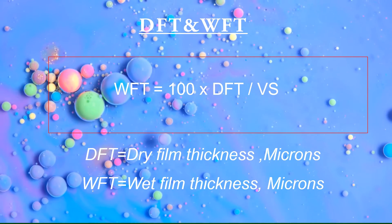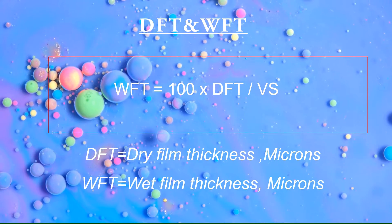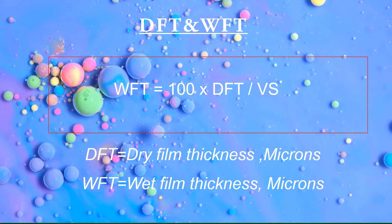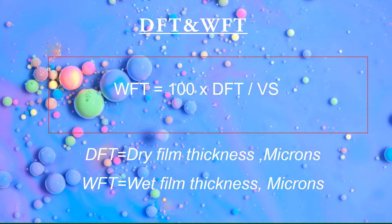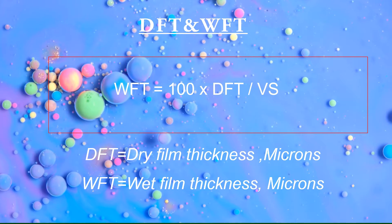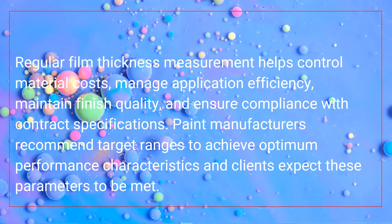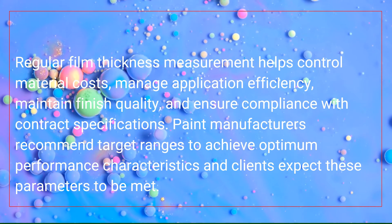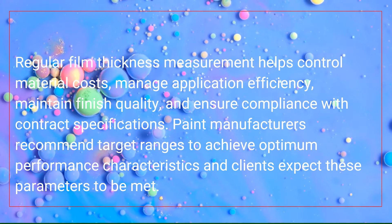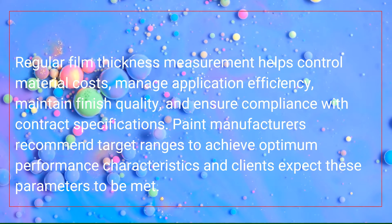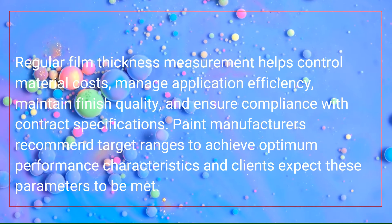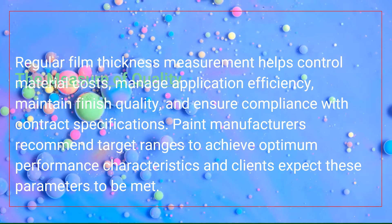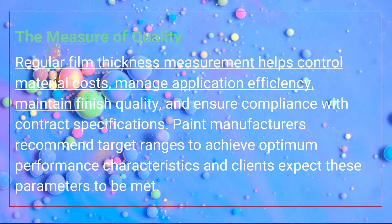What is wet film thickness and dry film thickness? The wet film thickness figure given on a specification relates to the thickness of the coating when it has just been applied and still wet. As soon as the coating begins its drying process, solvent and volatile components will be leaving from the coating.